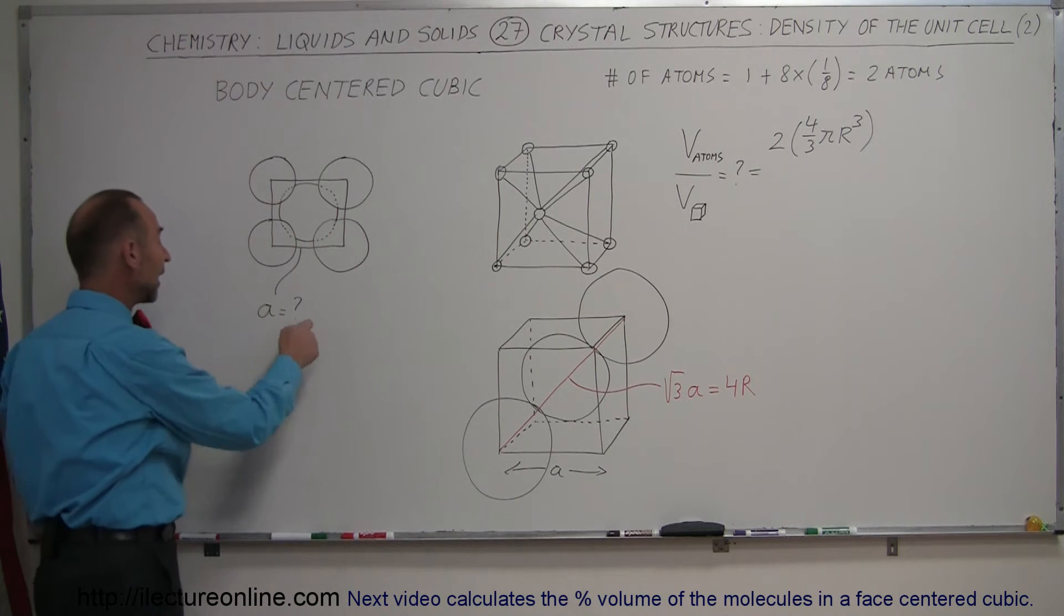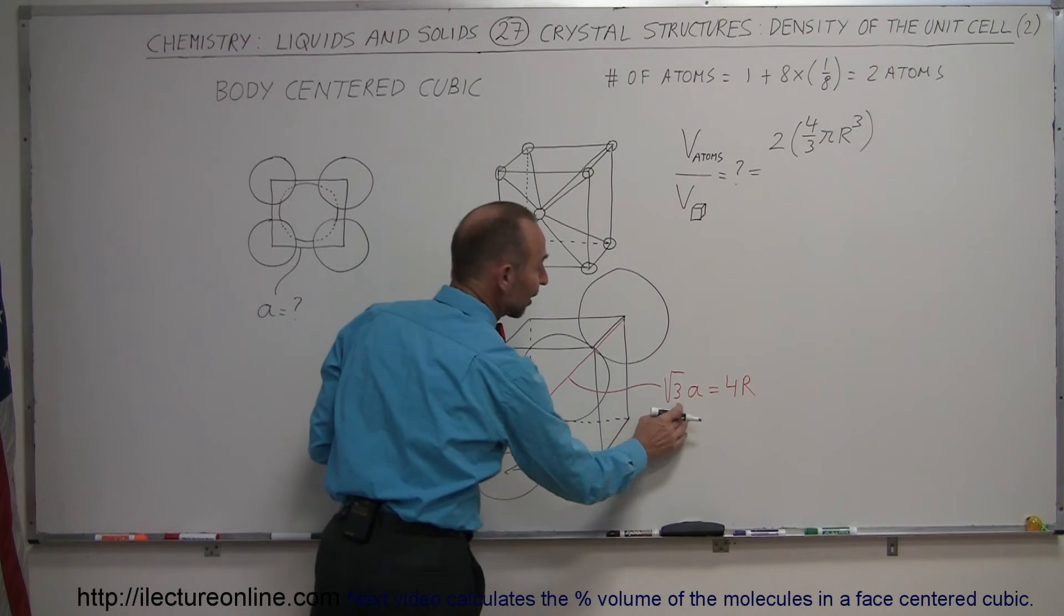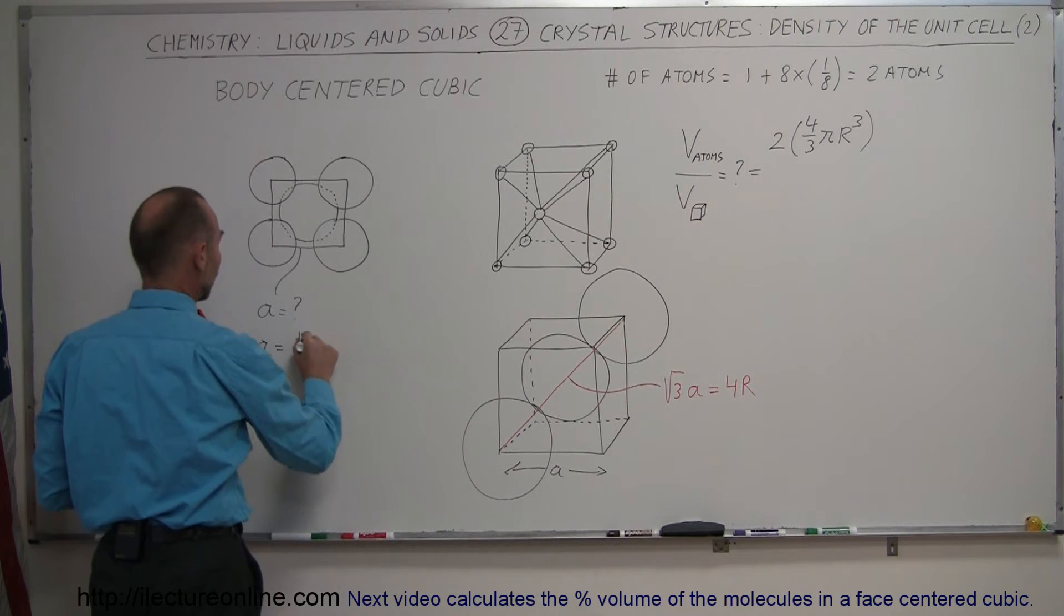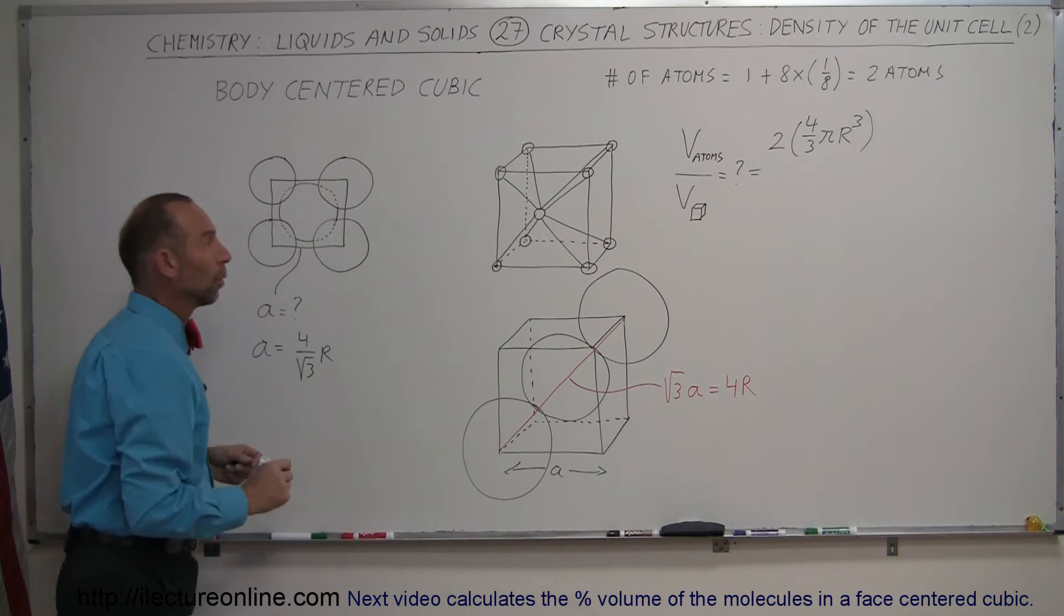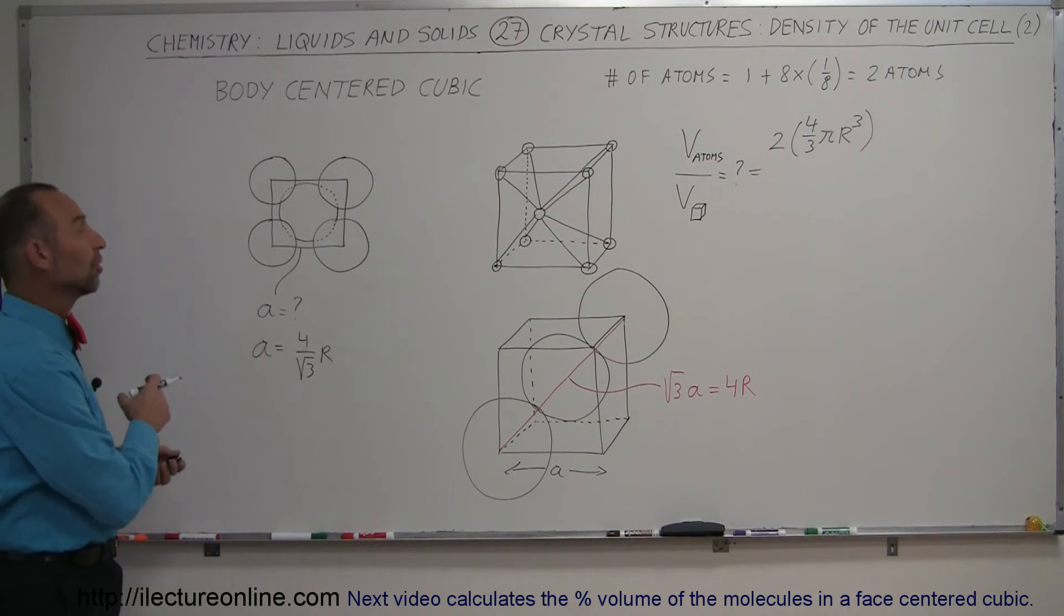From that, we should be able to find out what the side is in terms of the radius. So all we have to do is divide both sides by the square root of three, and we get a is equal to four divided by the square root of three times r.